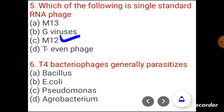Question 6. T-bacteriophages generally parasitize: Bacillus, E. coli, Pseudomonas, or Agrobacterium. The correct answer is E. coli.